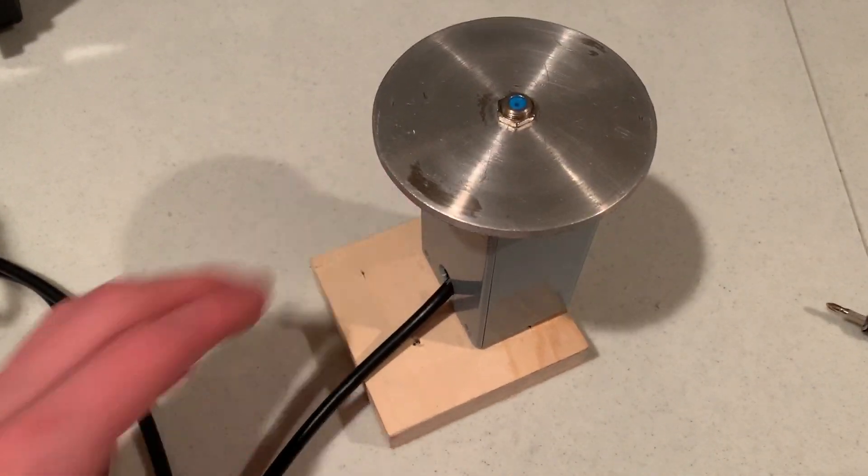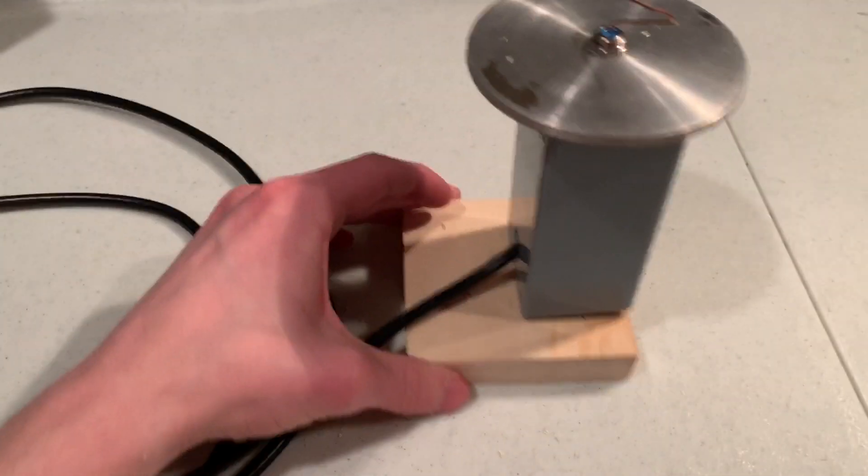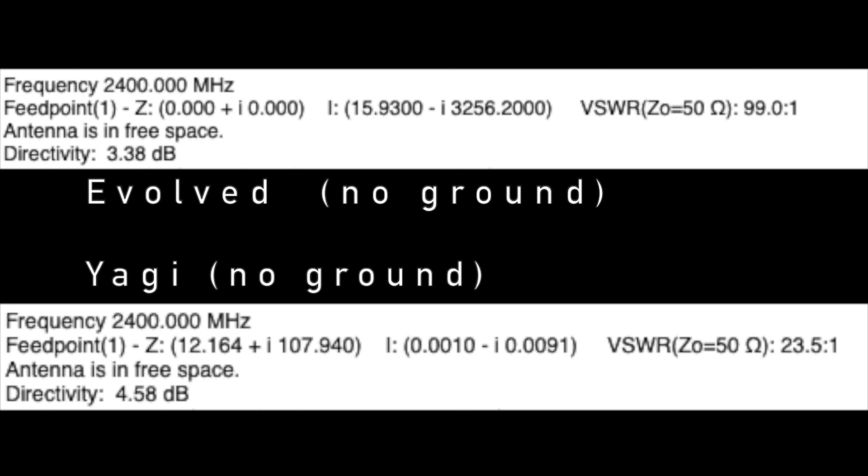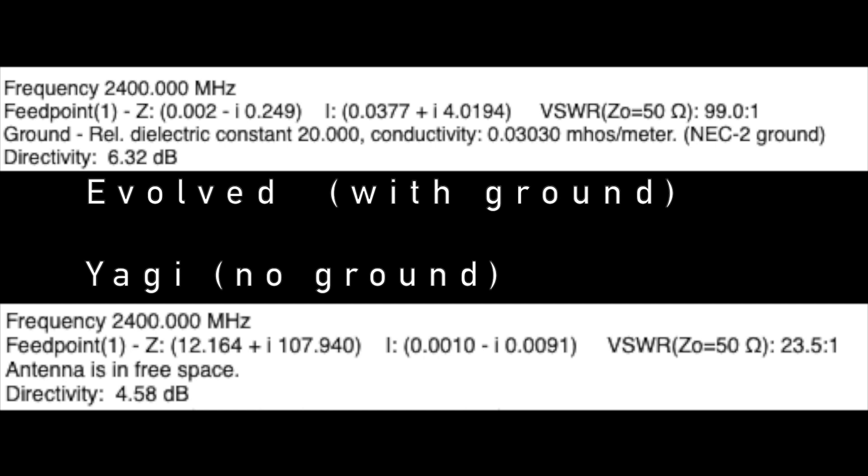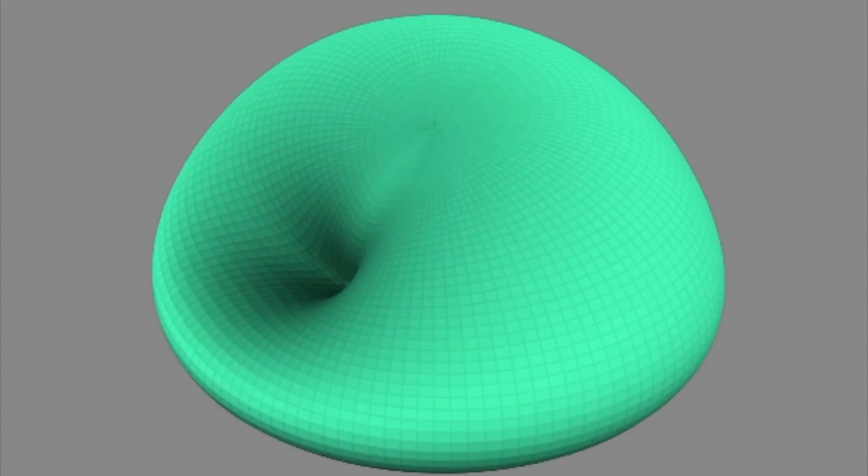But I had simulated them in an NEC program prior, and I saw that my evolved antenna without the ground plane had a directivity just slightly lower than the Yagi, and with the ground plane it had a directivity just slightly higher. So the performance was pretty much on par, which was really good, especially given the physical size of my evolved antenna. And then also something to note is that my evolved antenna had actually a pretty uniform radiation pattern, which allowed me to position it in any way.